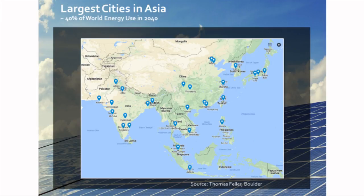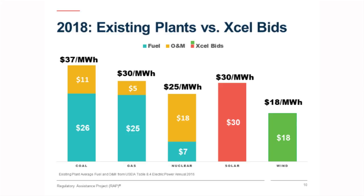We have Excel in Colorado, which just received bids in response to an RFP for new resources. Wind came in at 1.8 cents a kilowatt hour. Solar and wind at 3 cents a kilowatt hour. That's total cost. These are operating costs of the competition, which is the existing units.